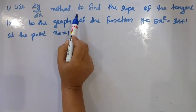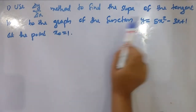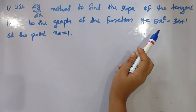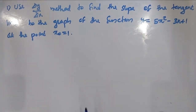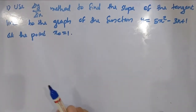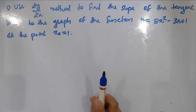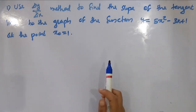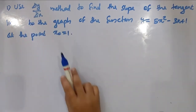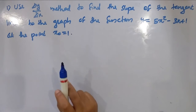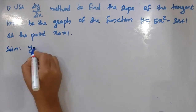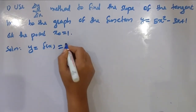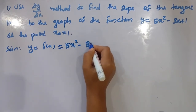Use the Δy/Δx method to find the slope of the tangent line to the graph of the function y = 5x² − 3x + 1 at the point x₀ = 1. That is the function, and we want the slope of the tangent. The given function is f(x) = y = 5x² − 3x + 1.